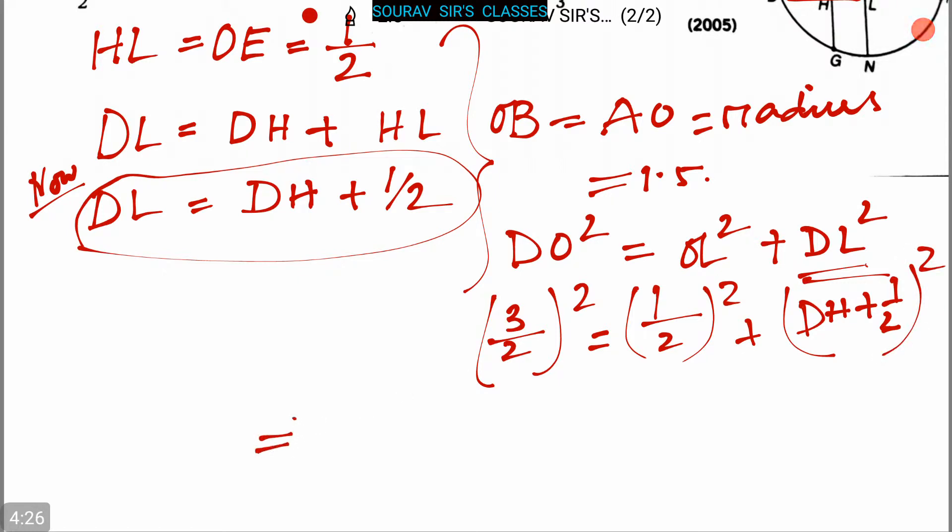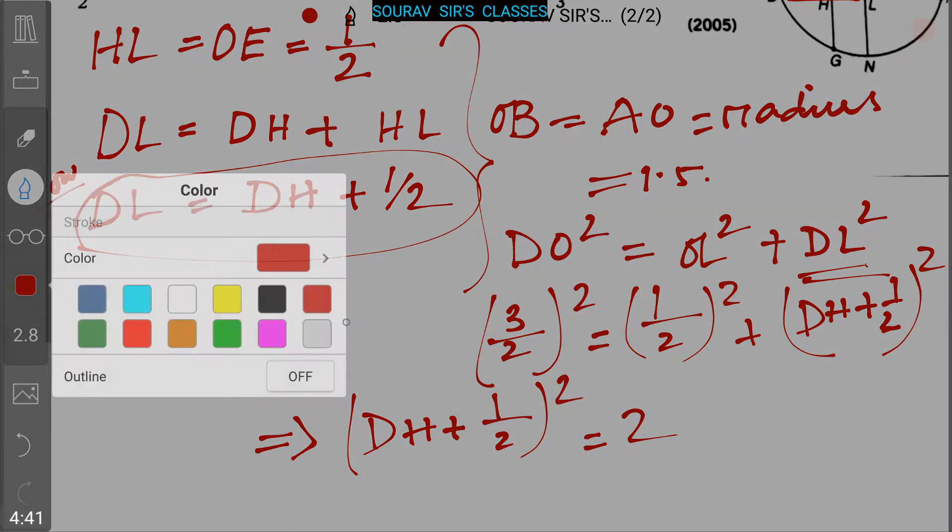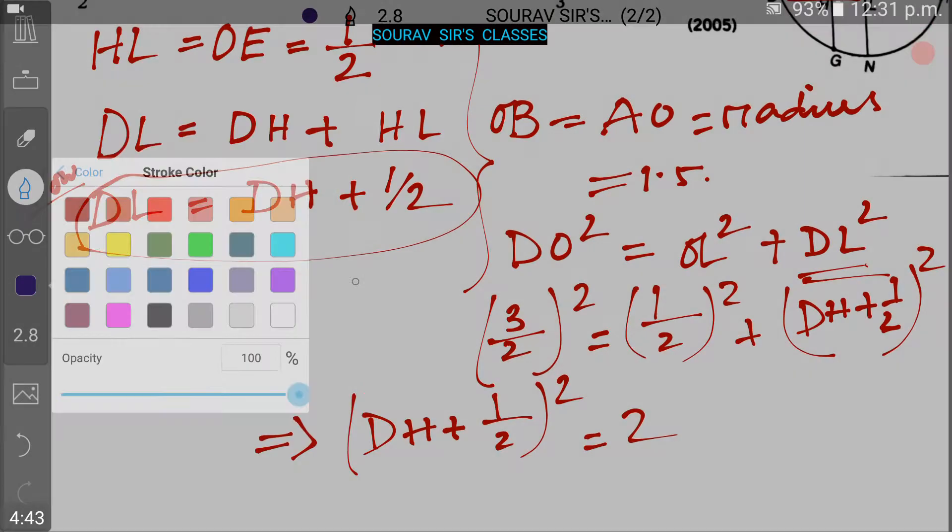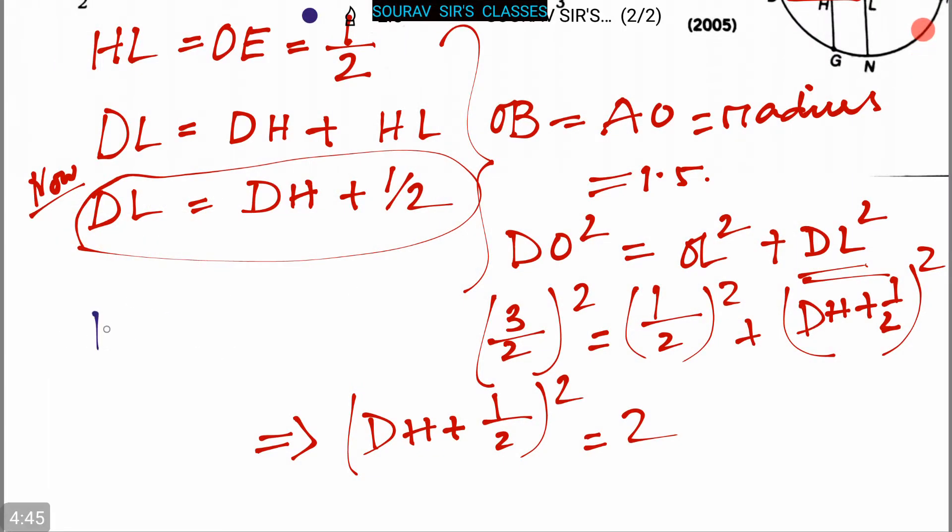From this, DH plus half whole square is equal to 2. Now from this, we can say that DH is equal to root 2 minus 1 by 2.